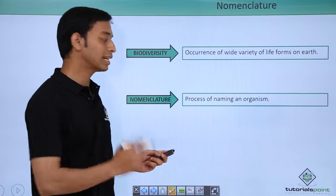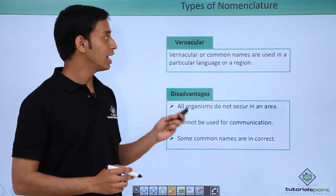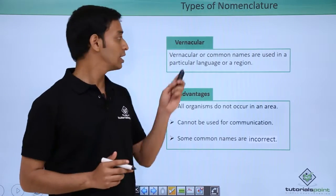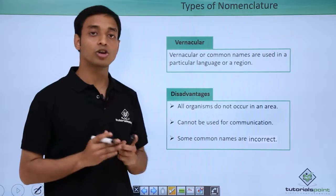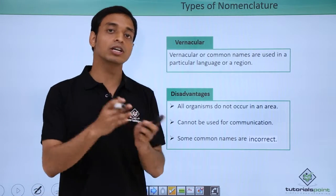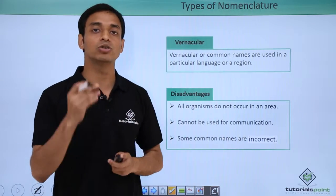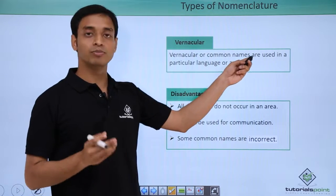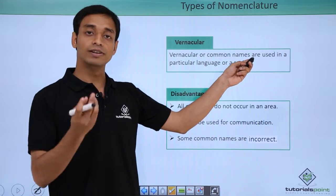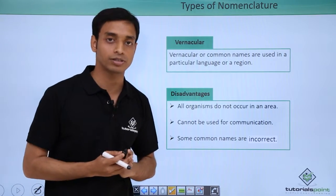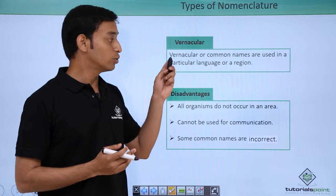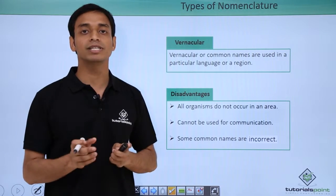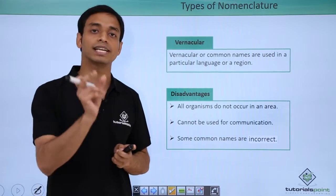This process of naming an organism is known as nomenclature. Nomenclature can be of two types. The first type is vernacular nomenclature, which is nothing but the common names given to any type of organism. These are names which are mostly regional or language based. Vernacular names are mostly uninomial, meaning they consist of a single word.